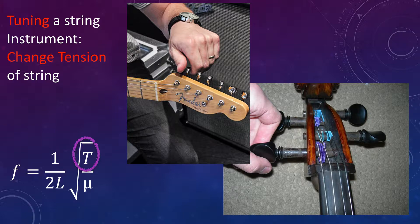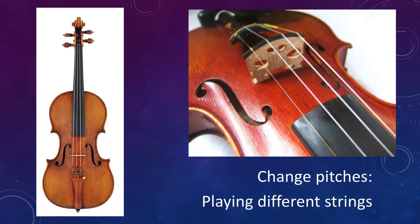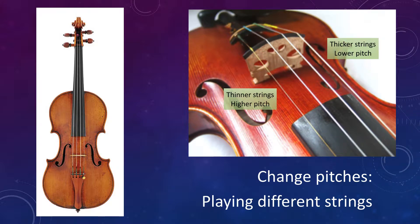They play different pitches two ways. First, by playing on different strings. The lower pitched strings are generally thicker than the higher pitched strings. So except for piano and harp, that allows the strings on each instrument to be the same length. The thicker the string, the greater the linear mass density, and the lower the pitch.